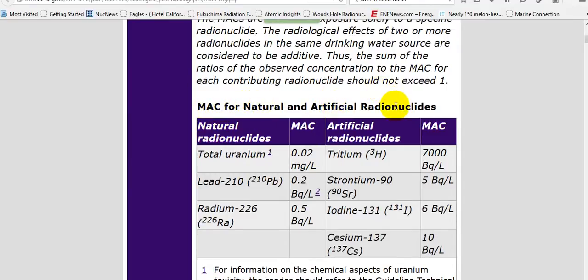Natural and artificial radionuclides. Natural, you can see 0.2 of a becquerel a liter, 0.5 becquerels per liter. Tritium, which is man-made. Strontium-90 is man-made. Iodine-131 is man-made. Cesium-137 is man-made.